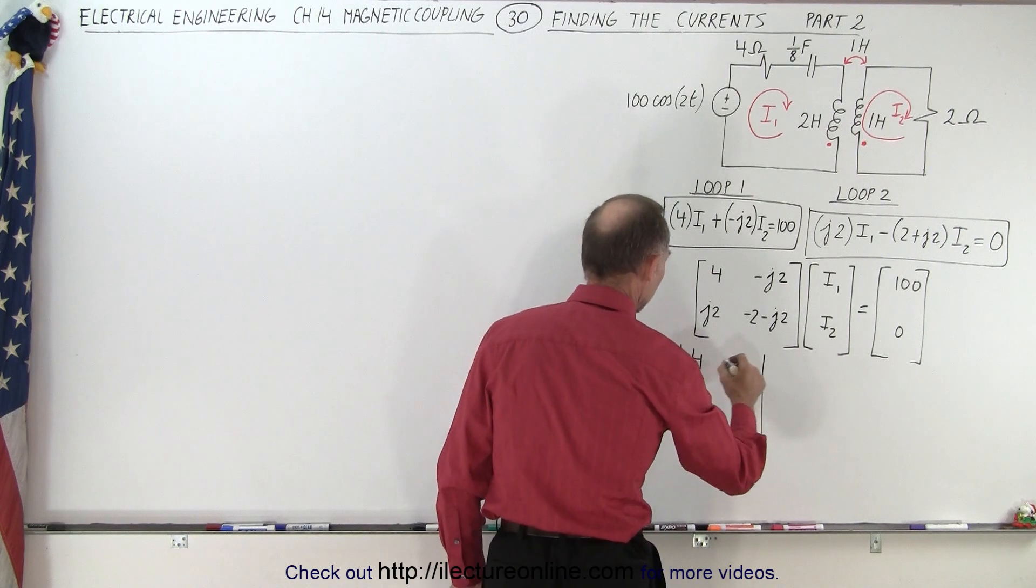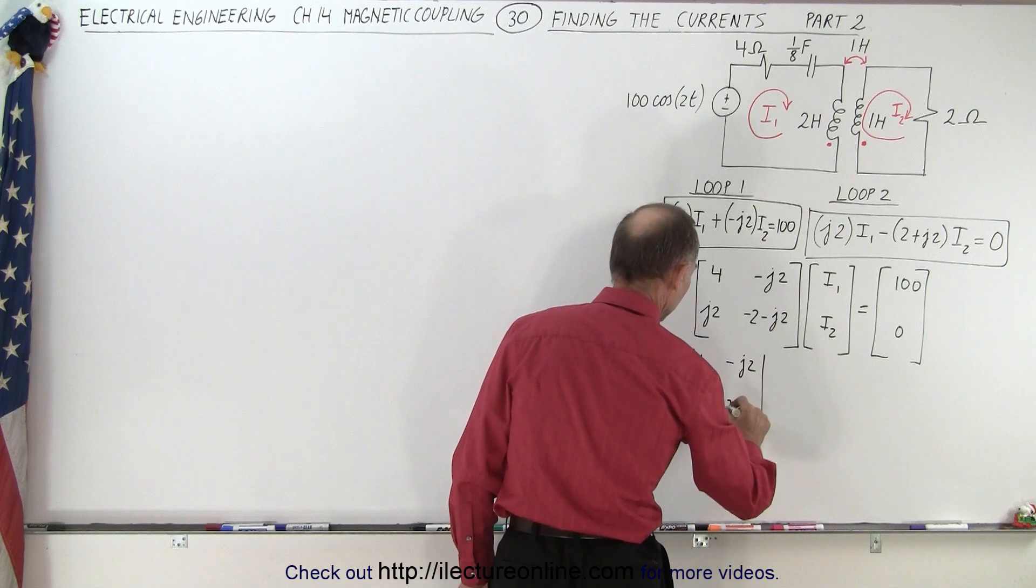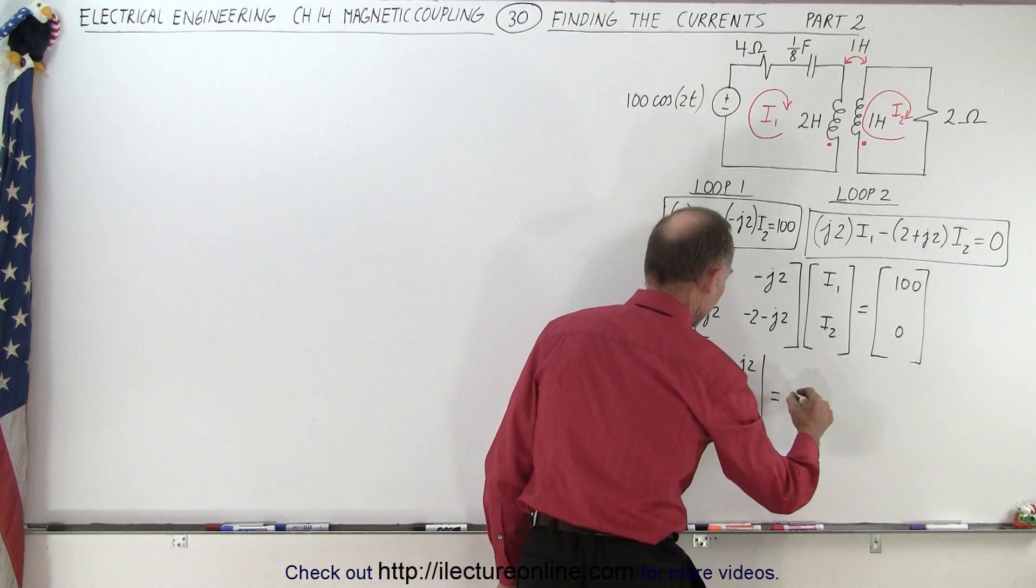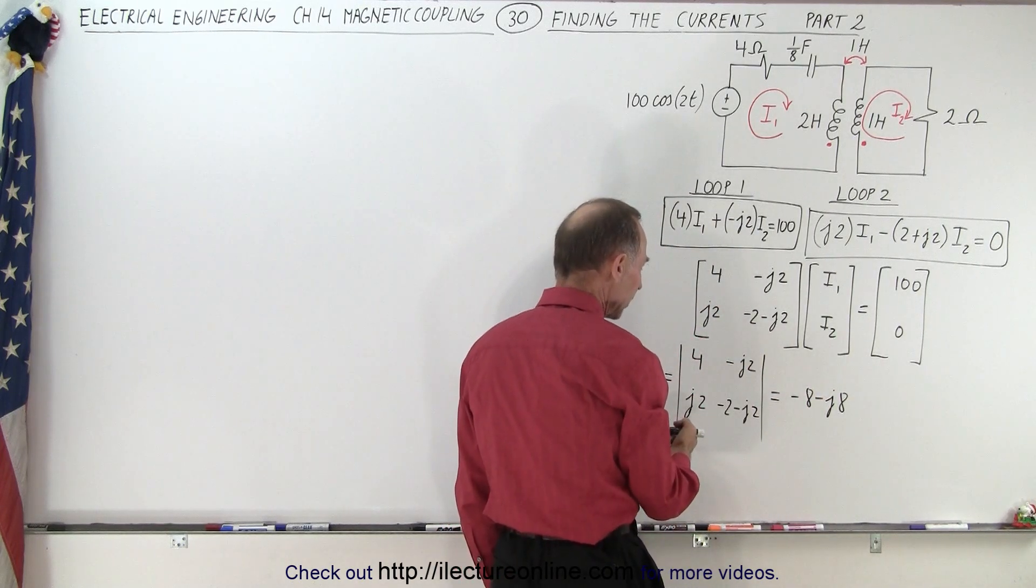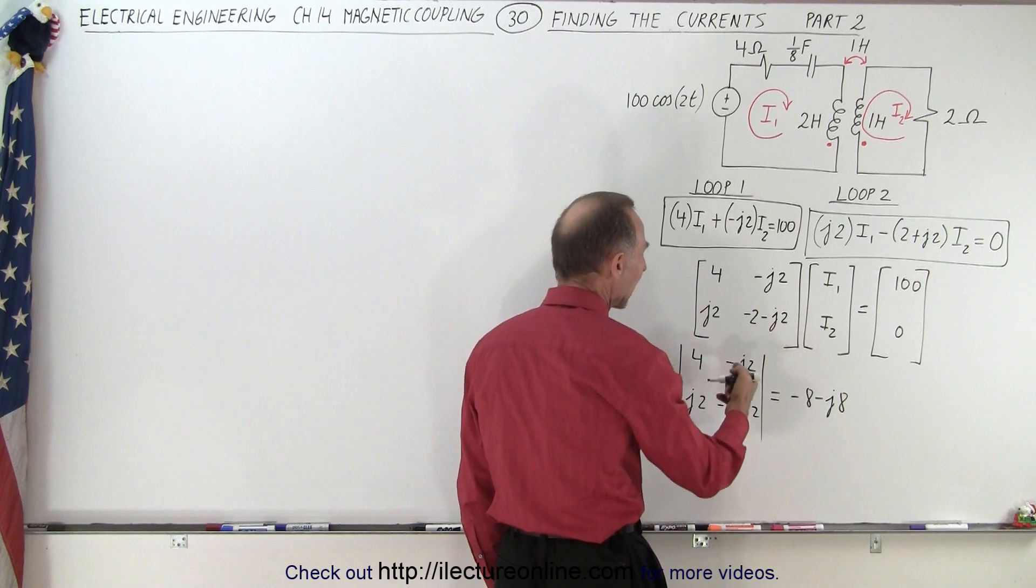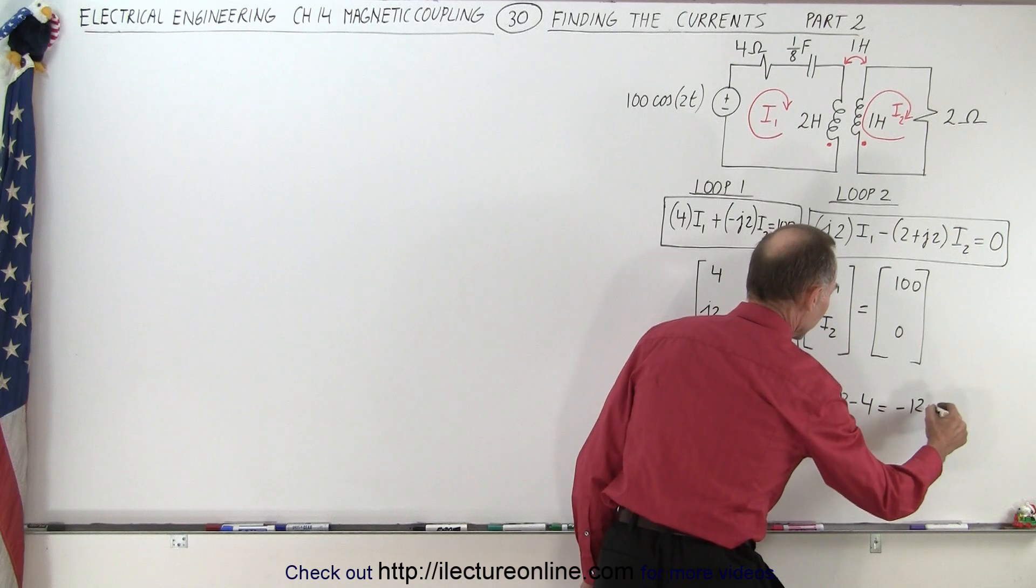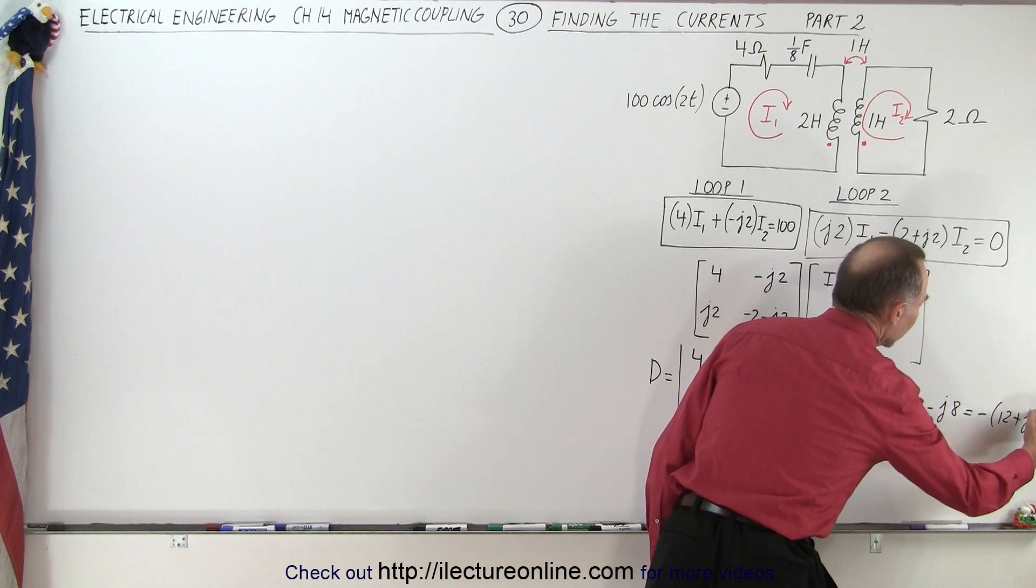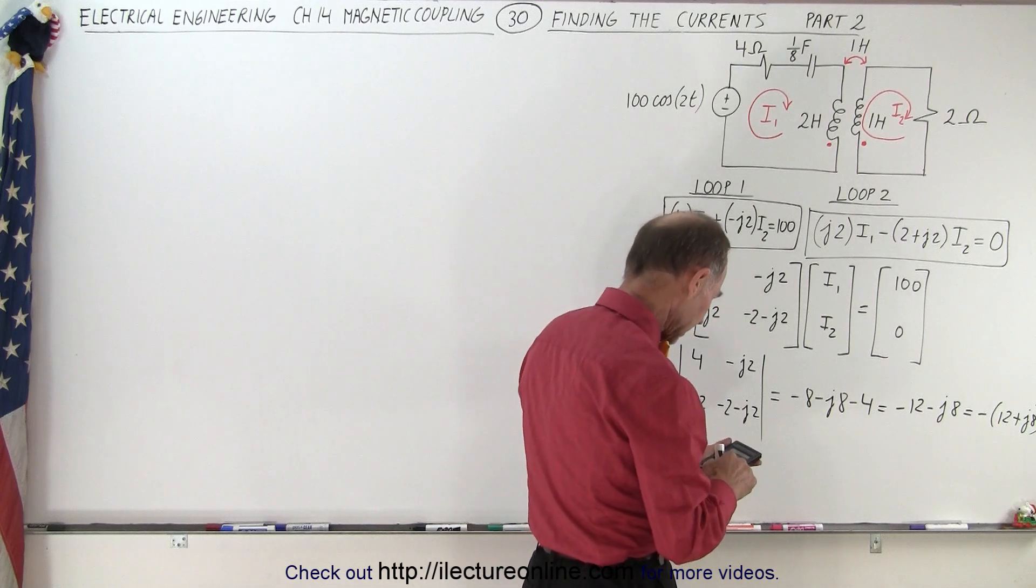First, we find the determinant of this right here. We get 4 minus J2, J2 for here, and we have minus 2 minus J2 for that element. Now we multiply these two together, so we end up with minus 8 minus J8 minus the product of these two. Notice a minus times a minus becomes plus, but a J times a J becomes a negative. So that's negative times 4 or negative 4. This becomes equal to minus 12 minus J8, or minus 12 plus J8 when we pull out the negative sign.